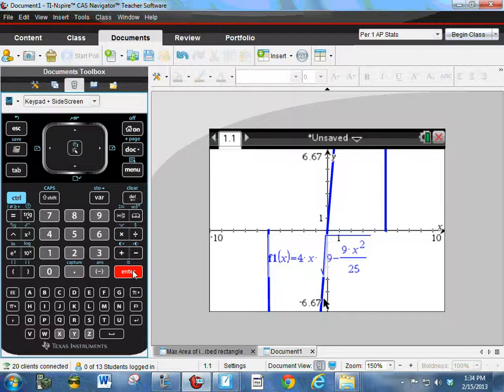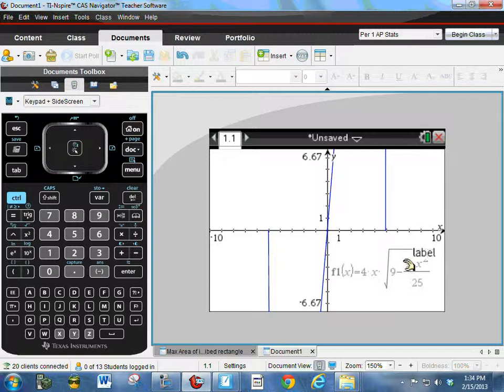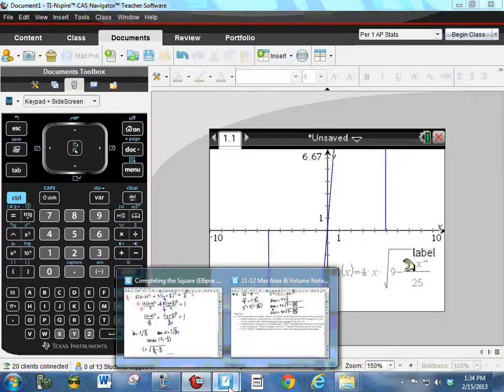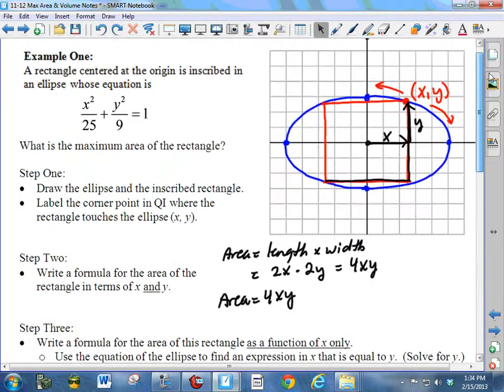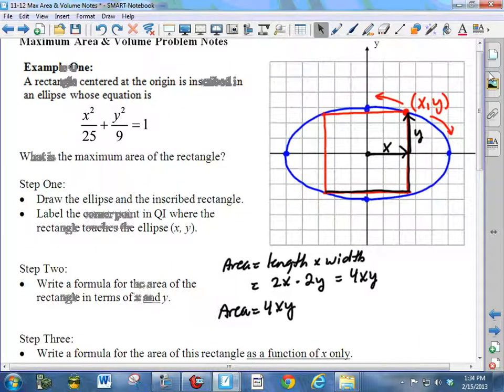And I'm going to type in 4 times X times the square root of 9 minus 9X squared divided by 25. Okay, and if I graph that, that's interesting. I get kind of some of it goes down and some of it goes up. I'm going to kind of move this out of the way here. Now what part of this graph am I interested in?